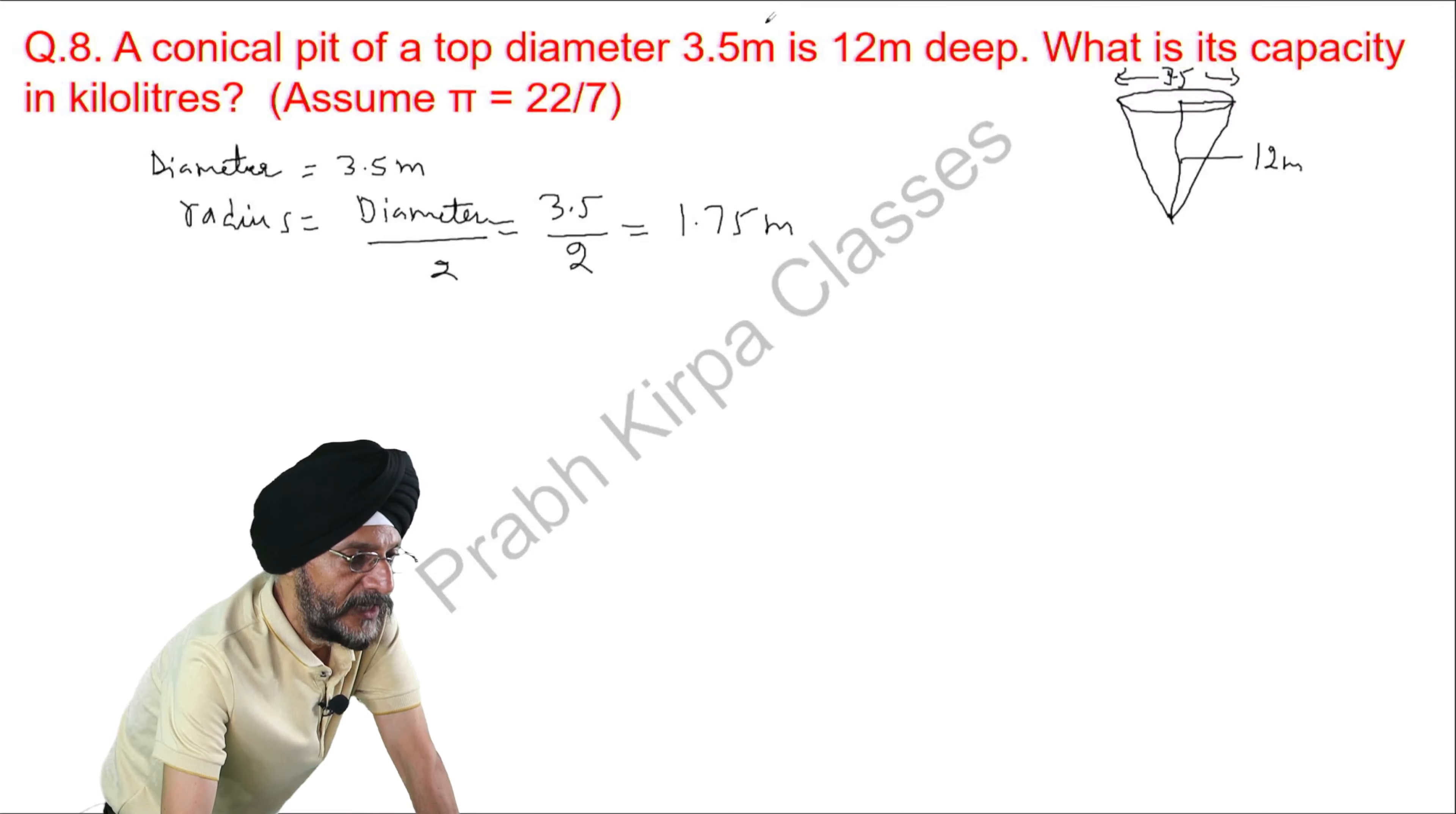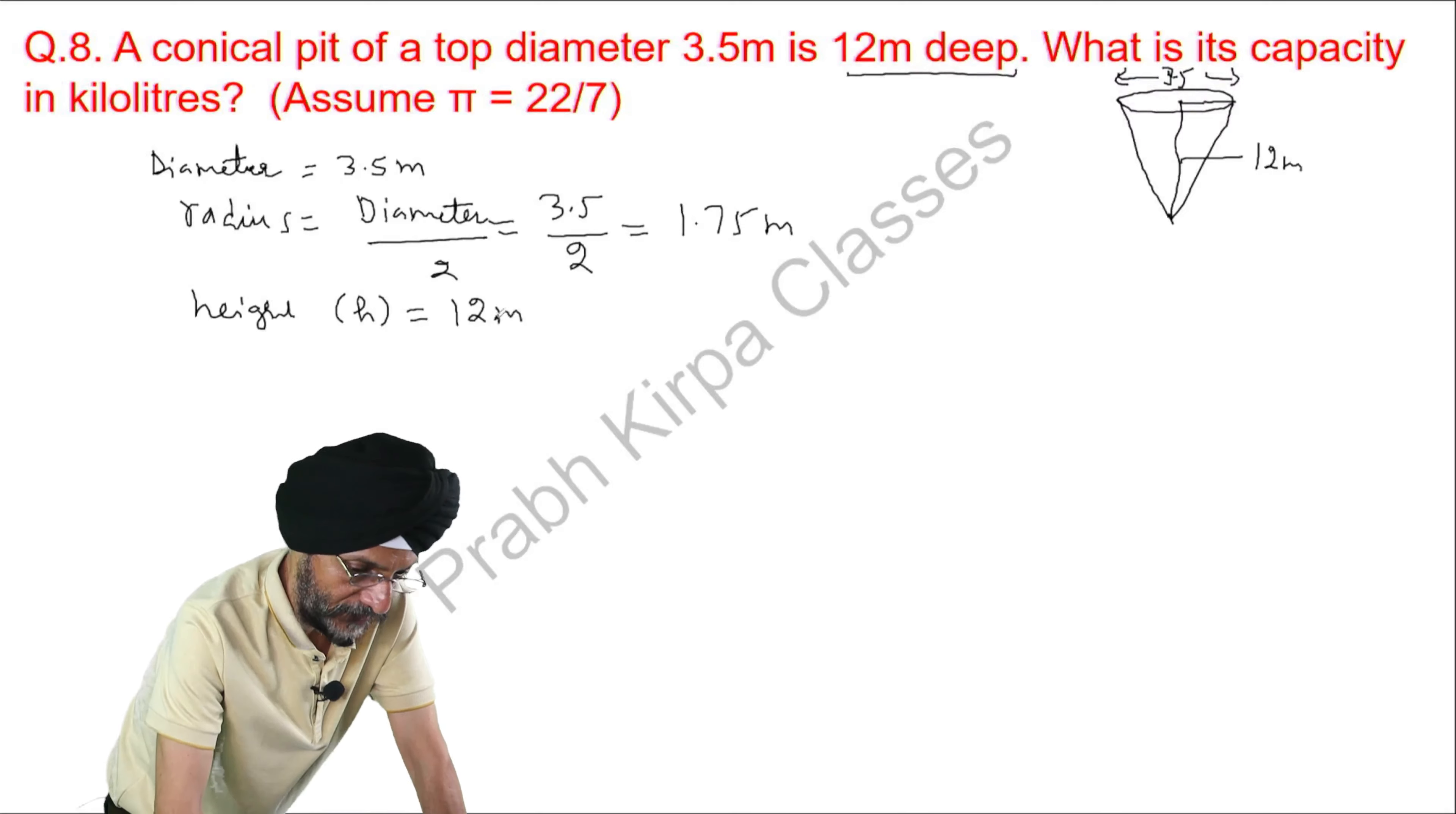Now, it has been written that conical pit is 12 meter deep. Deep means height, height is equal to 12 meter.